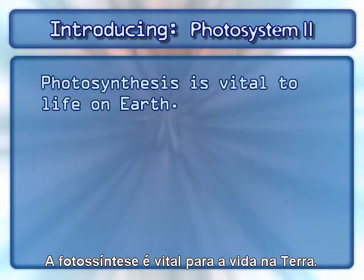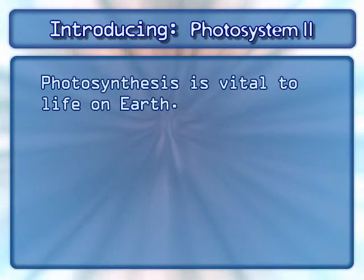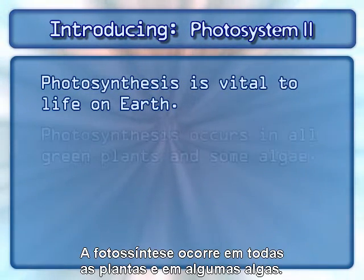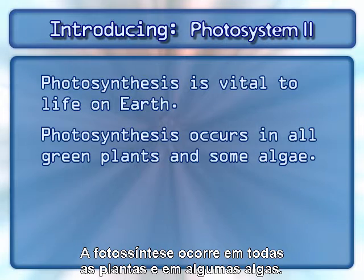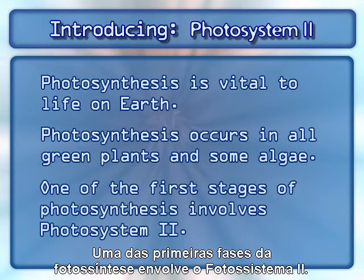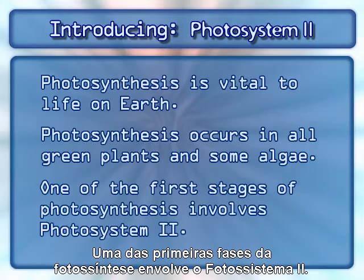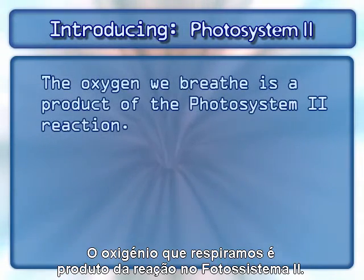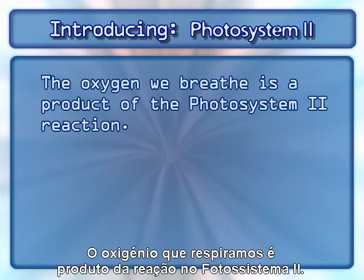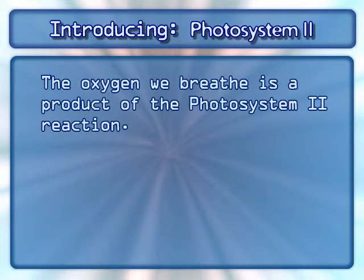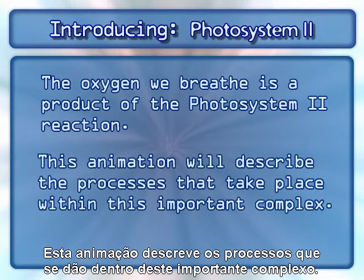Photosynthesis is vital to life on Earth. It occurs in all green plants and some algae. One of the first stages of photosynthesis involves Photosystem II. The oxygen we breathe is a product of the Photosystem II reaction. This animation will describe the processes that take place within this important complex.